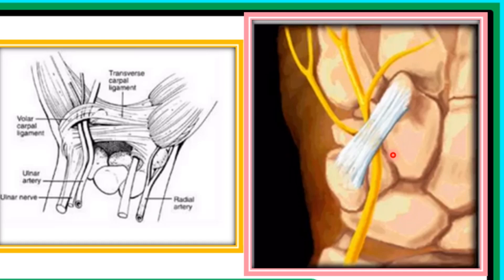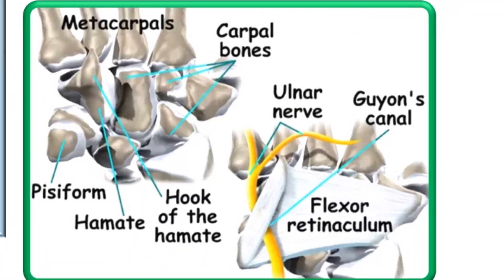As soon as the ulnar nerve runs distal to the pisiform, it divides into its two terminal branches: the superficial branch and the deep branch. Here we can see the flexor retinaculum, the volar carpal ligament, and the two terminal branches of the ulnar — the superficial and the deep.